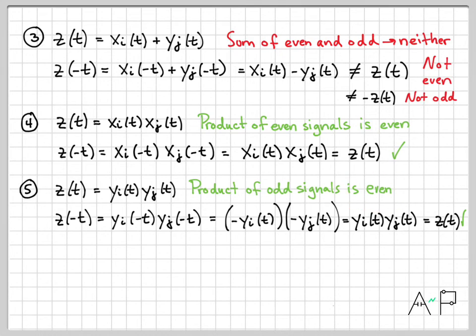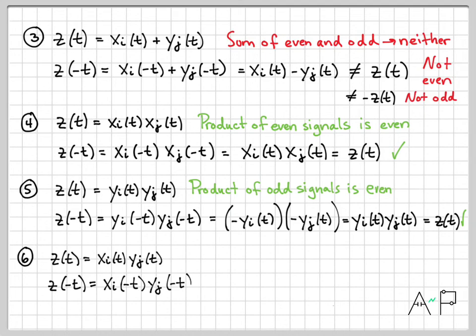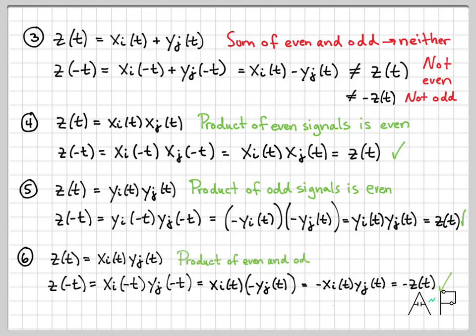Final property: what happens if I take a product of an even and an odd? z(-t) = xi(-t) · yj(-t). Since xi is even and yj is odd, this becomes xi(t) · (-yj(t)) = -xi(t)yj(t) = -z(t). So z(-t) = -z(t), which means a product of an even and an odd signal is odd.